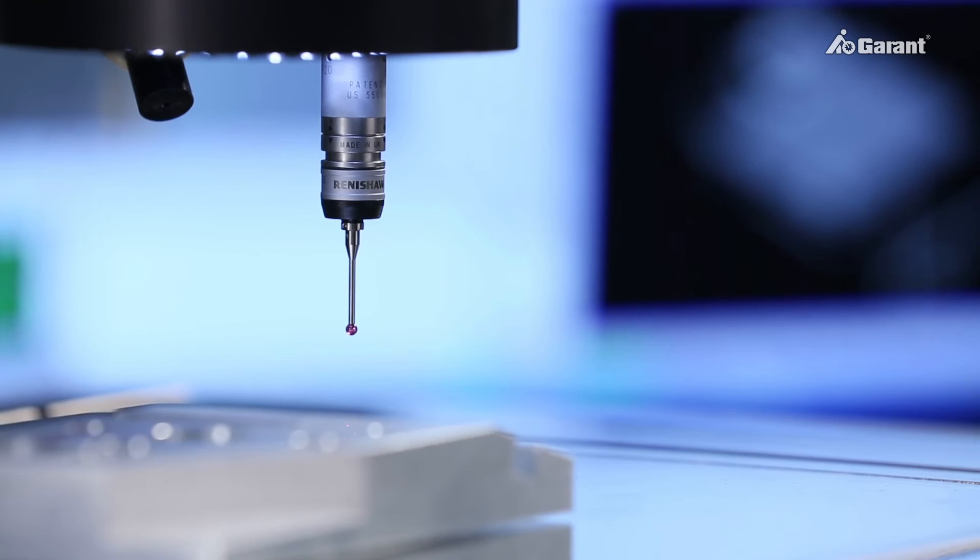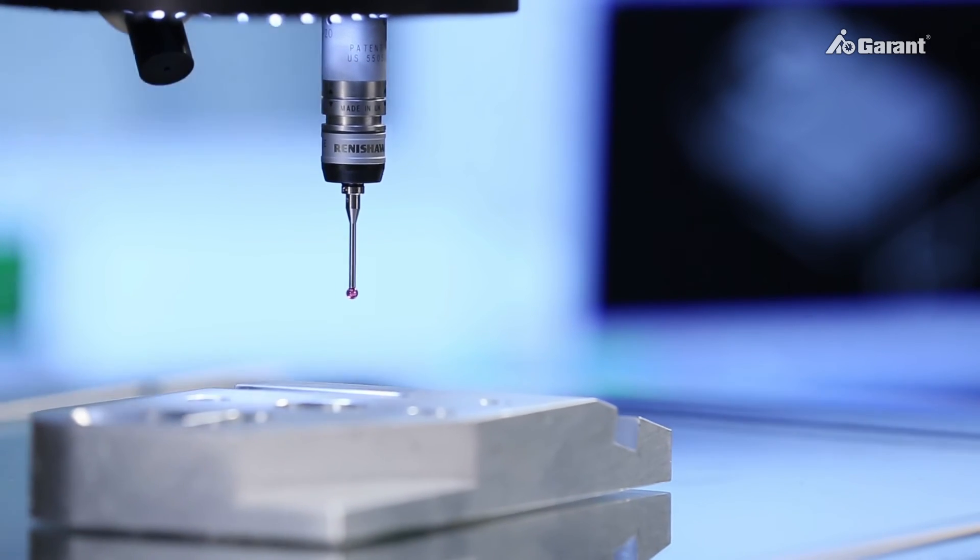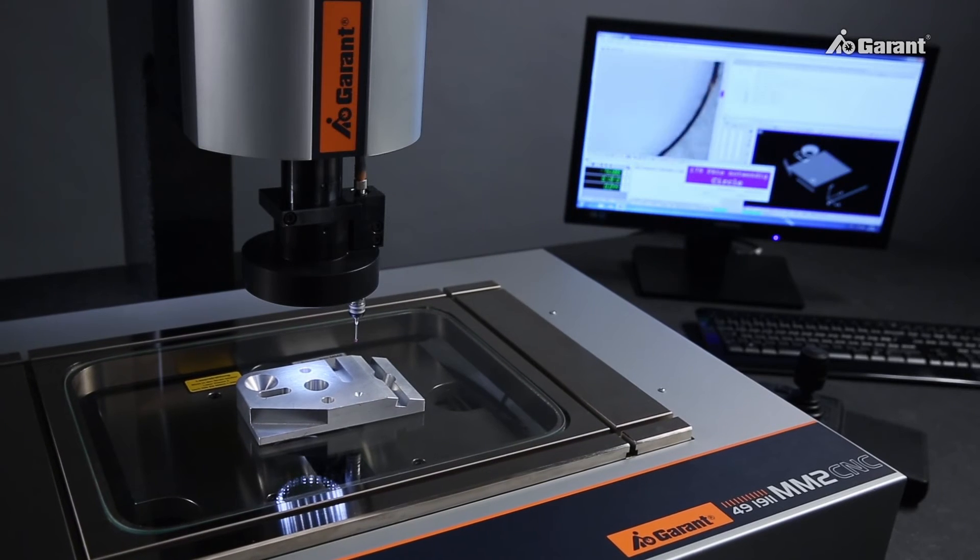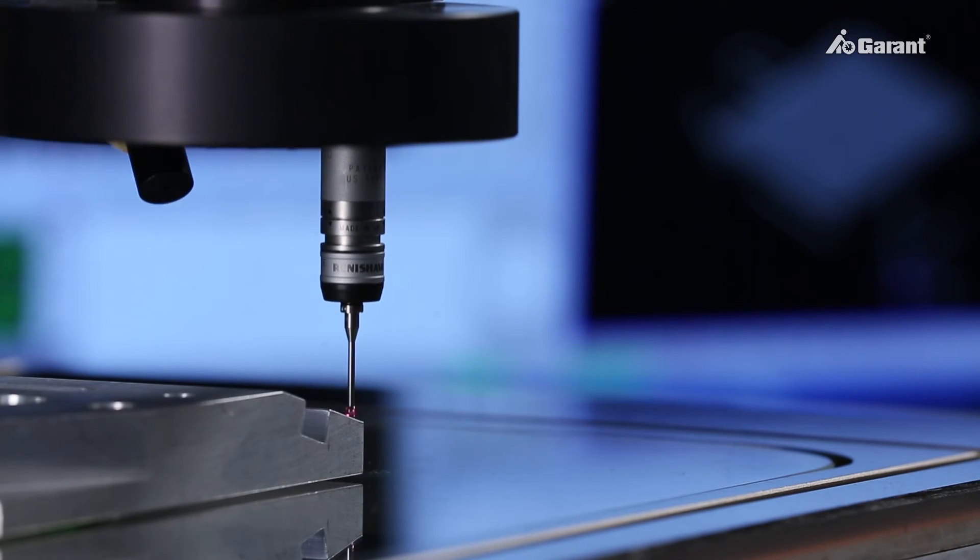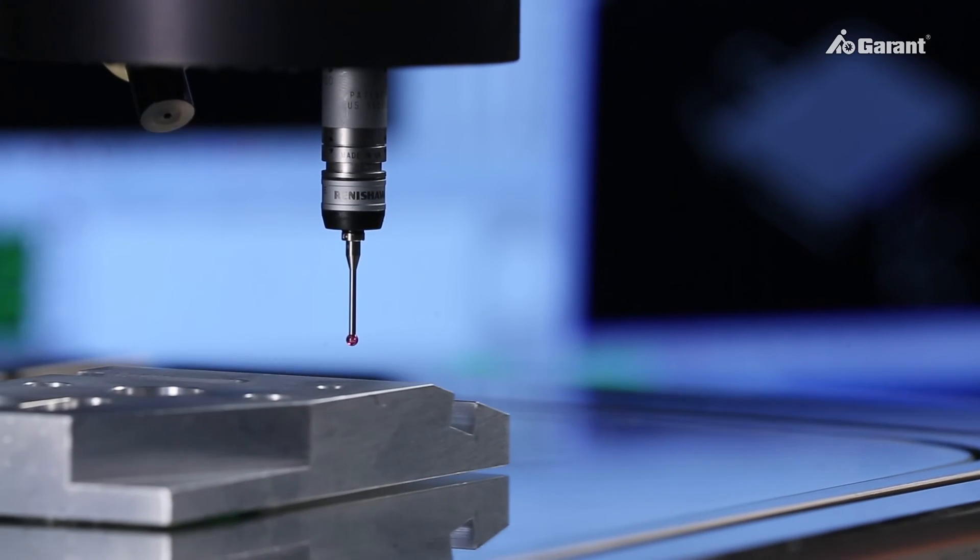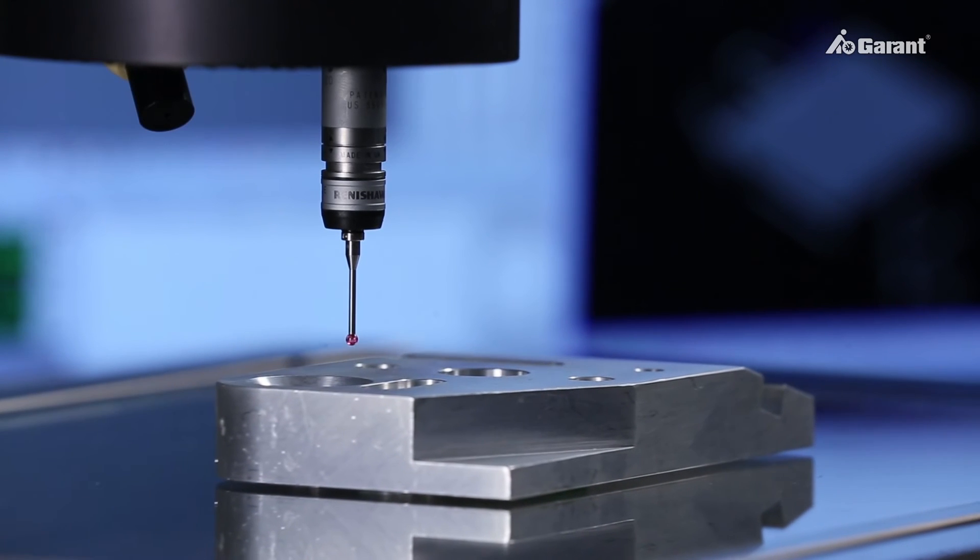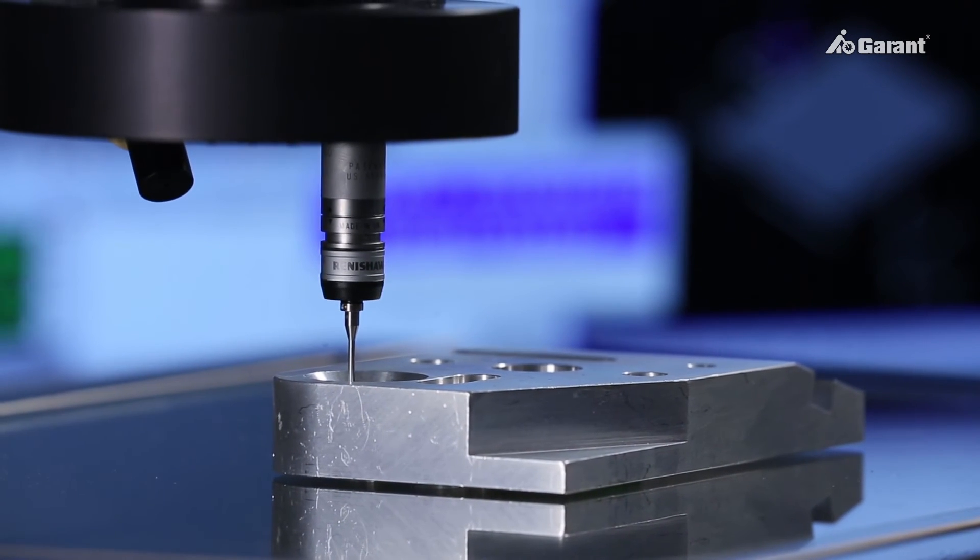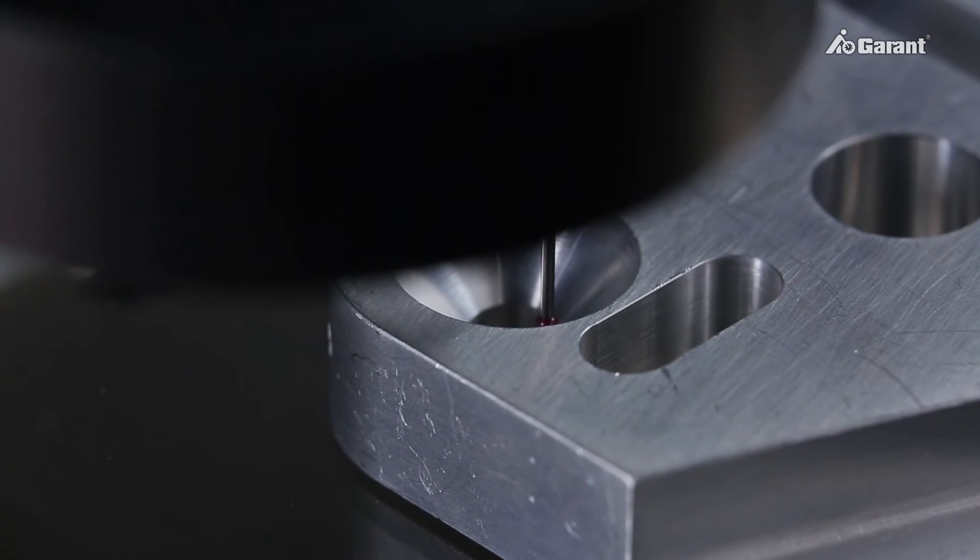The Garant MM2 multi-sensor measuring machine is particularly suitable for use in inspection rooms and laboratories. Where measurement tasks require it, the range of applications of the Garant MM2 can be further extended by the addition of a tactile measurement system.